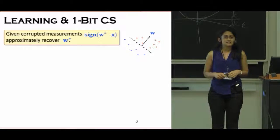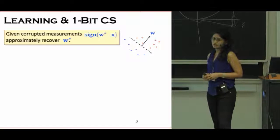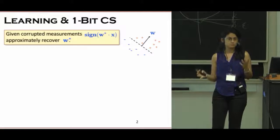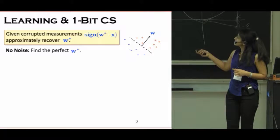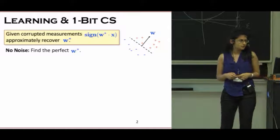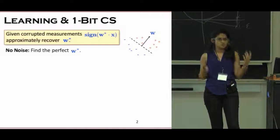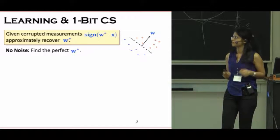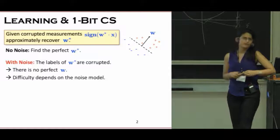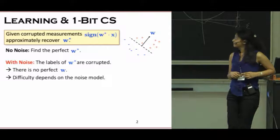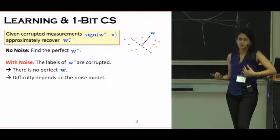This is known in learning theory as learning half-spaces, and in signal processing it's known as 1-bit compressed sensing. When there is no noise, or you see exactly the sign of W star dot X, if you have enough samples, you can show that any consistent half-space is a good enough approximation. But once you have noise, there are no perfect half-spaces, and the difficulty of this model really depends on what kind of assumptions you make on the noise model.